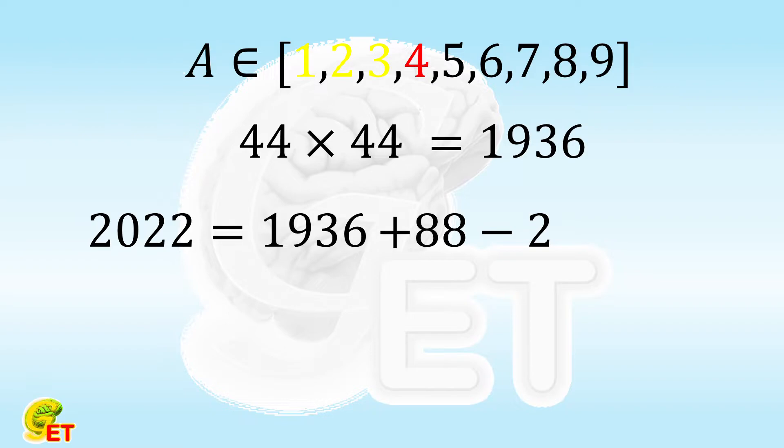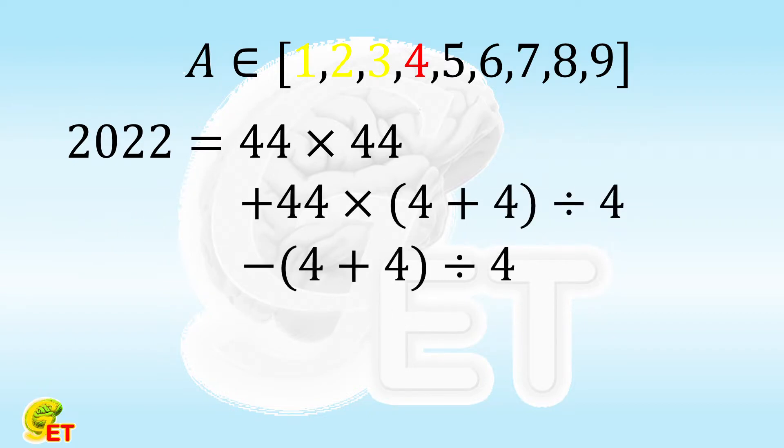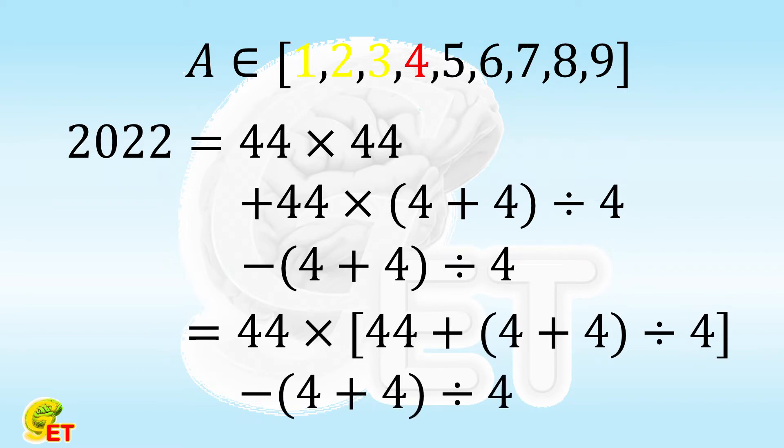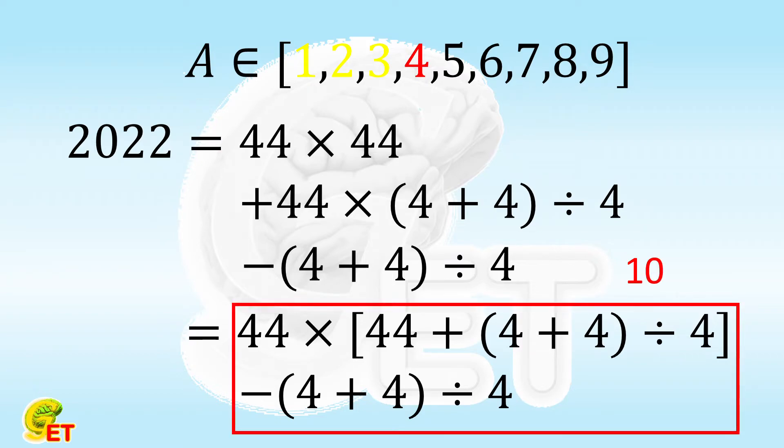In fact, 2 is the summation of 4 plus 4 divided by 4. So 2022 is 44 times 44 plus 44 times 4 plus 4 divided by 4 and minus 4 plus 4 divided by 4. It can also be sorted out a little bit as 44 times the sum of 44 and 4 plus 4 divided by 4. There are in total 10 times of 4.